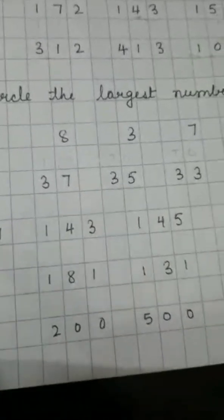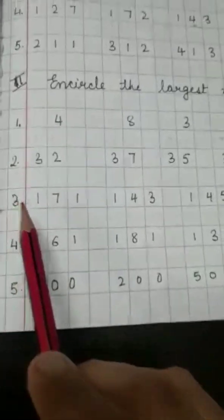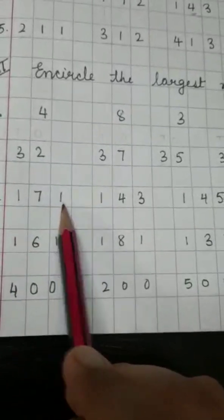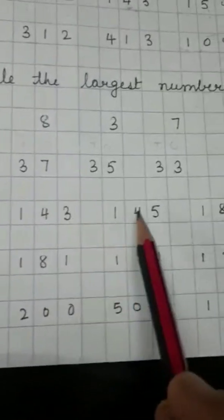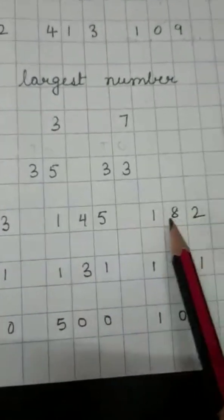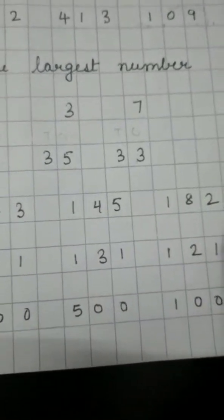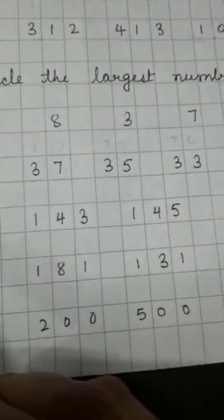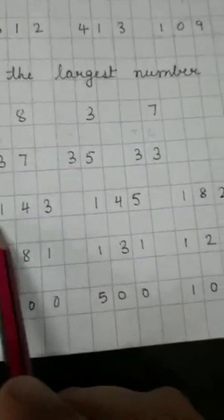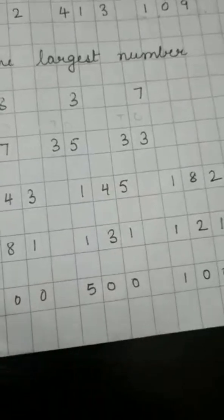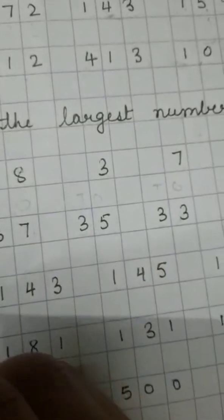Okay? Now, come to next question. 171, 143, 145, 182. So, children, again, 100's place is same. So, now we will come to the next place value that is 10's, right?